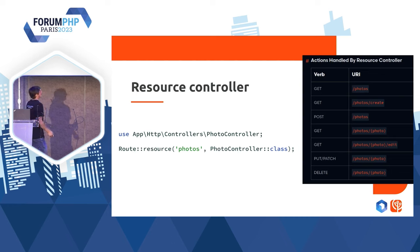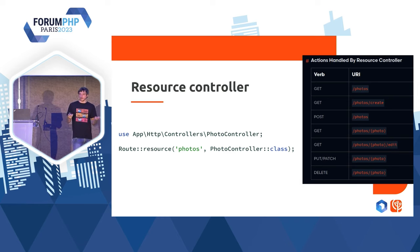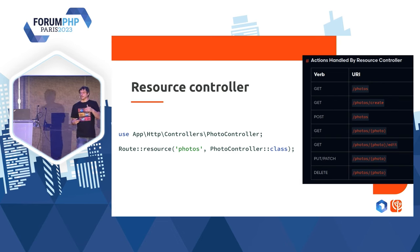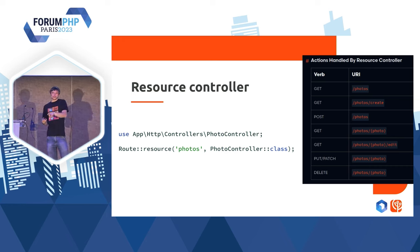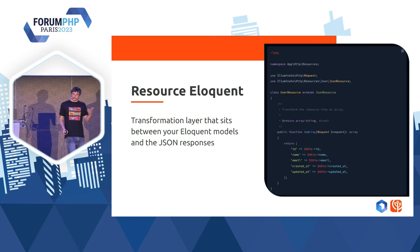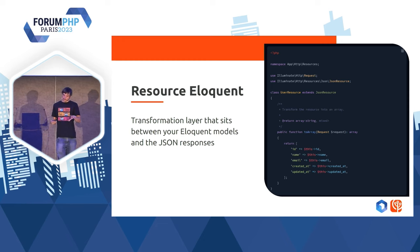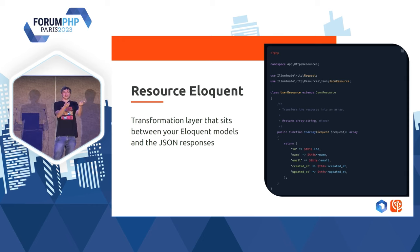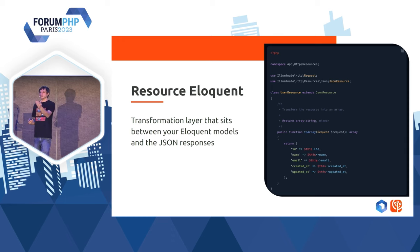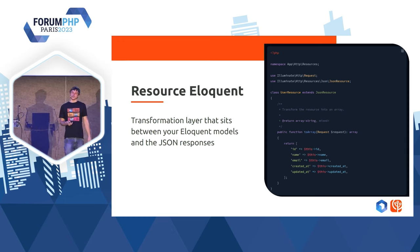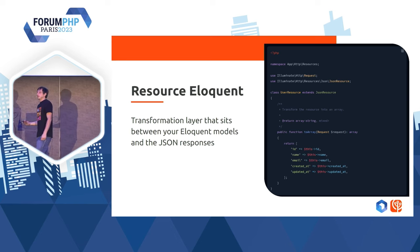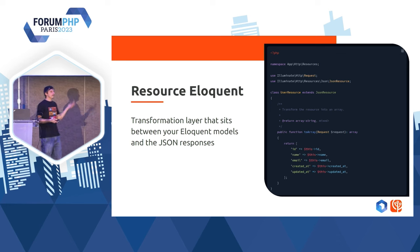Dans Laravel, on retrouve aussi des moyens de faire ce qu'ils appellent des ressources. Vous voyez un resource controller. Quand on déclare un resource controller, ça va derrière nous générer un CRUD avec plusieurs routes. Dans notre contrôleur, pour chaque route on va avoir une méthode et pouvoir implémenter quelque chose. Vous voyez aussi qu'on a une ressource dans Eloquent — ça va nous permettre de faire une transformation de données et de dire : cette ressource, quand je veux la sérialiser sur une API, je ne veux que ces champs. C'est la manière recommandée dans la documentation.